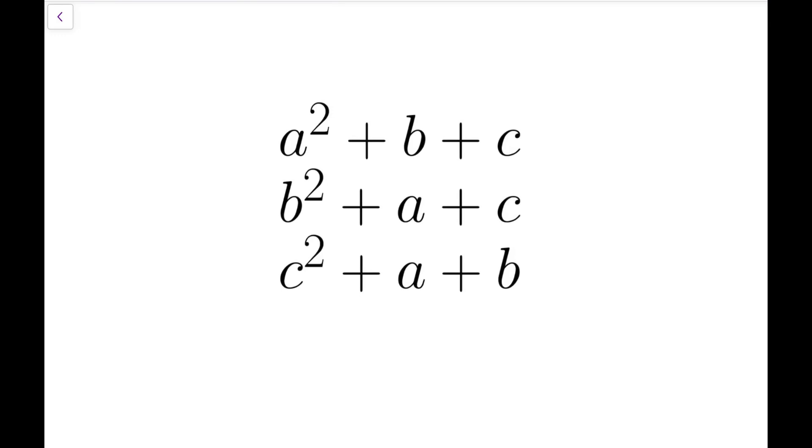We are asked to prove that these three numbers cannot be perfect squares at the same time. It is actually more convenient to think about what will happen when these three numbers are all perfect squares. That means we are thinking from the opposite direction. So let's assume that, which means we are trying to do a proof by contradiction.